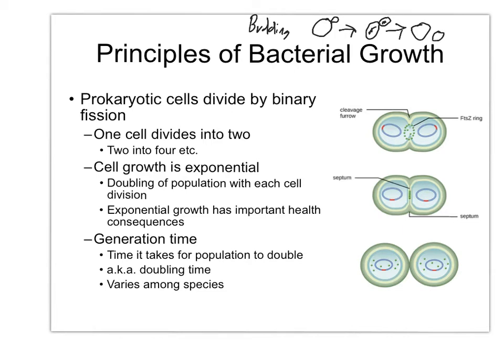With budding, you have a mother cell and a daughter cell, and you can tell which is the mother and which is the daughter. In binary fission, both of the child cells look functionally the same.